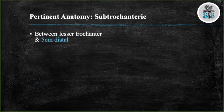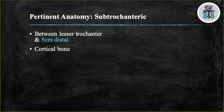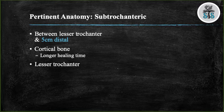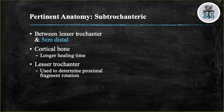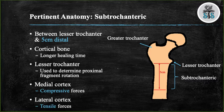The subtrochanteric region of the femur is defined as the area between the lesser trochanter and five centimeters distal. This region is comprised of cortical bone, which has longer healing times. When looking at an AP x-ray of the hip, you always want to look at the lesser trochanter as a landmark to help determine the rotation of the proximal fragment. The lesser trochanter is a posterior structure, so if you are seeing more of the lesser troch, the proximal fragment is externally rotated. The medial cortex is under compressive forces and the lateral cortex is under tensile forces. Sometimes when you see this fracture in the emergency department, you consider traction prior to surgical intervention to minimize blood loss by decreasing the potential third space in the zone of injury.